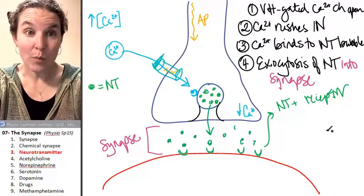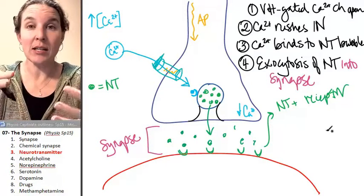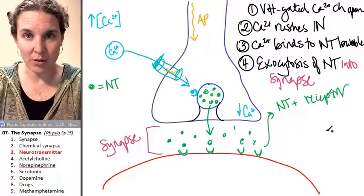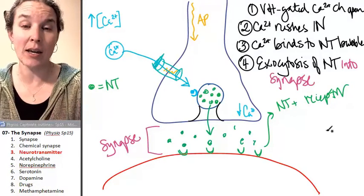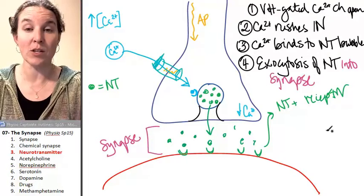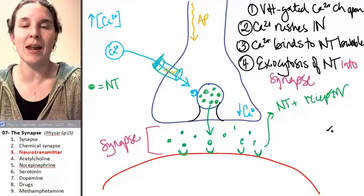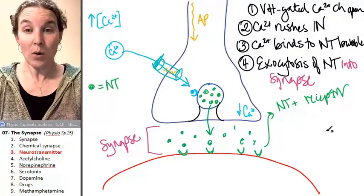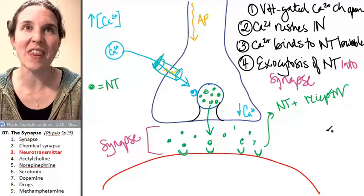Having an effect - neurotransmitter causing an action in an effector or causing another action potential in a postsynaptic neuron. We have an effect. But here's the thing.